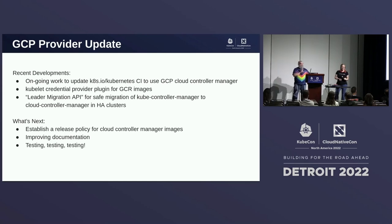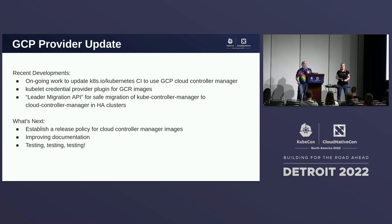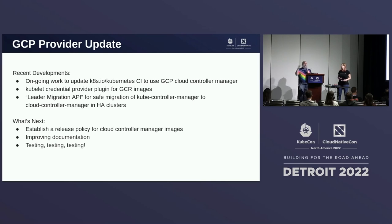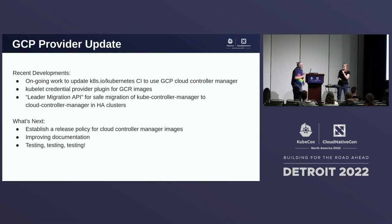Google has also been working on some updates. They've been continuing to progress their CI and doing interesting work behind the scenes testing different versions of the cloud controller against different versions of Kubernetes. Their Kubelet credential provider plugin — which we'll talk more about later — now has downloadable images. They've created a leader migration API to make safe migrations for their KCM from in-tree to out-of-tree CCM in their HA clusters. Coming next: a release policy for their images, improved documentation, and of course — testing, testing, testing.